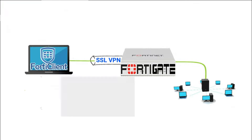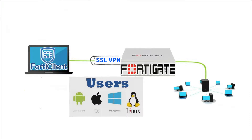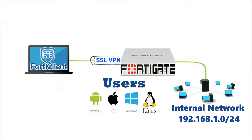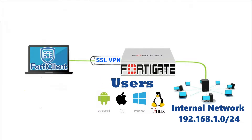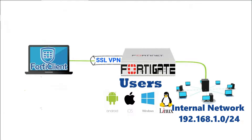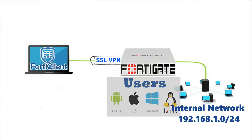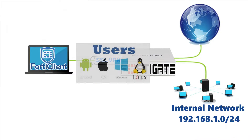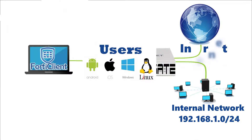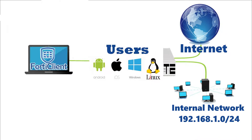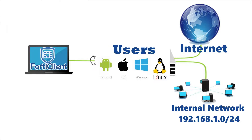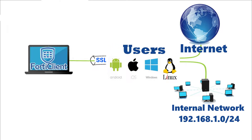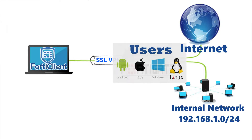We have two options. Option 1 is we will only allow remote users to connect to the network and access the internal network 192.168.1.0/24 subnet. The next option, we will allow remote users to access the internal network and also allow internet traffic to pass through the FortiGate for security scanning. This will be based on your topology or your preferences.